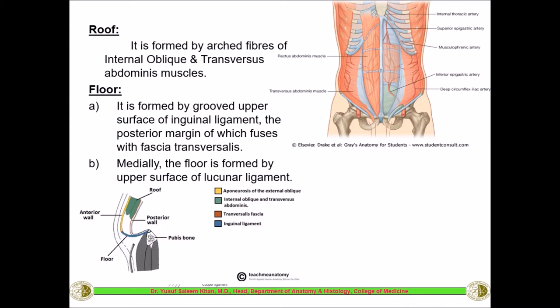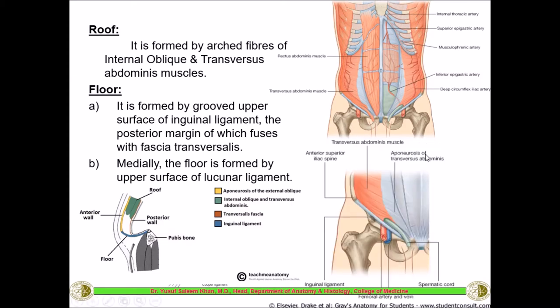The transverse abdominis arches to form the roof, and the internal oblique also arches. Thus the internal oblique and transverse abdominis partly form the anterior wall, partly the roof, and partly the posterior wall of the inguinal canal.